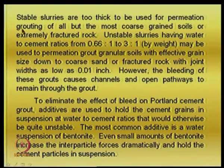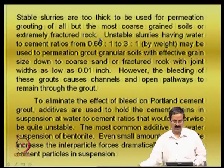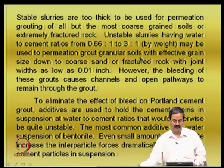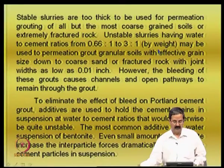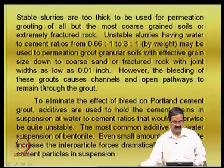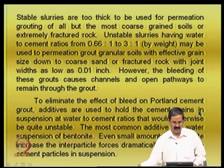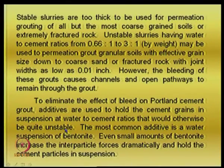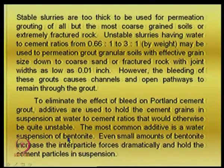The grout must be able to flow and fill up the voids. Stable slurries are too thick for permeation grouting except for very coarse soils or extremely fractured rock. Unstable slurries with water-cement ratios of 0.6 to 3:1 by weight may be used for permeation grouting — if permeation is the objective, go for somewhat higher ratios like 3:1. Grain size distribution characteristics must also be considered. The bleeding of these grouts causes channels and open pathways to remain throughout the grout.